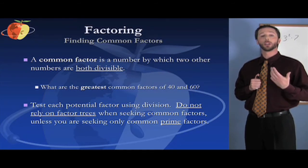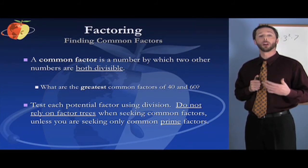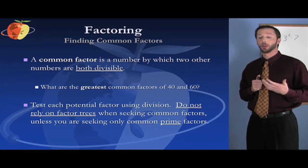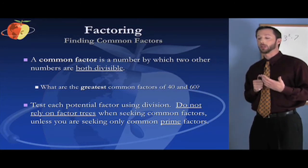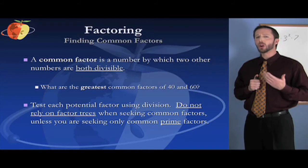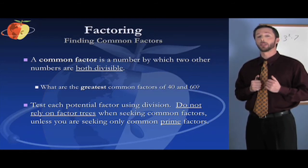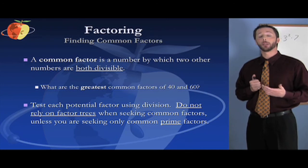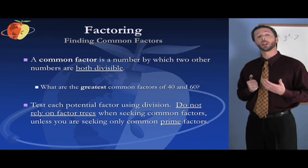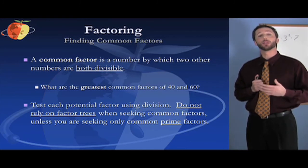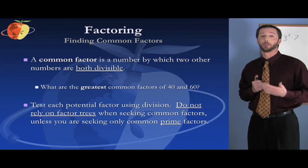So when you're looking for common factors, you're looking for a number by which both of these two numbers are evenly divisible. They have to both be divisible by the number. You can test the factors by using division. Don't rely on a factor tree if you're looking for common factors because you might leave out some of the common factors. Factor trees are great for prime factors, but if you're looking for common factors, you want to try simply dividing both of the numbers by different numbers to see which they're both evenly divisible by.